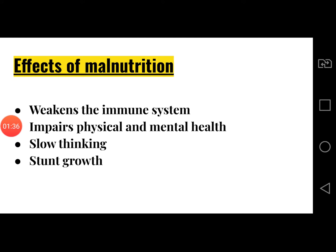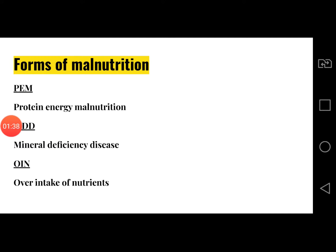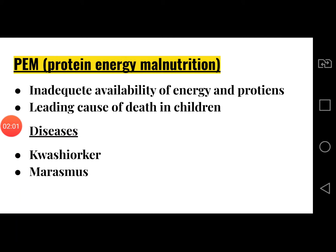There are three forms of malnutrition: protein energy malnutrition, mineral deficiency disease, and over intake of nutrients. We will discuss each of these three forms one by one. Protein energy malnutrition results if we have inadequate availability of energy and proteins in our diet.